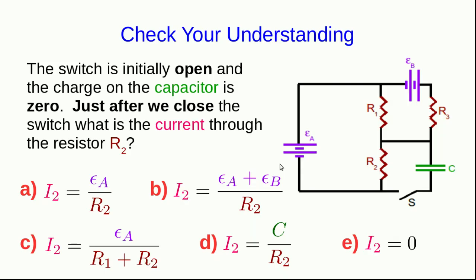Let's see how you're doing with understanding this. Here is what looks like a rather complicated circuit, but it should actually be pretty easy to figure out. The switch is initially open, and the charge on the capacitor is initially zero. At some point we close the switch — just after we close the switch, what is the current through resistor R_2?